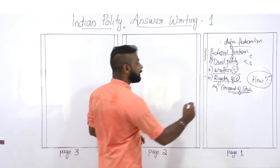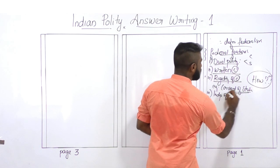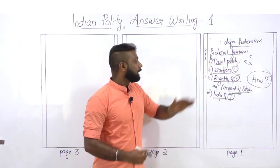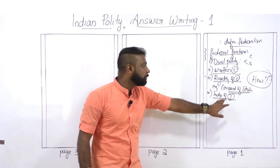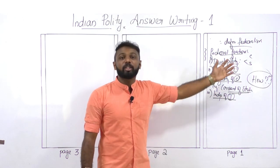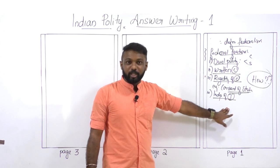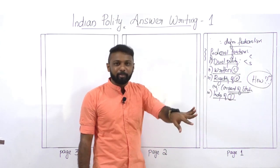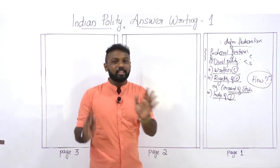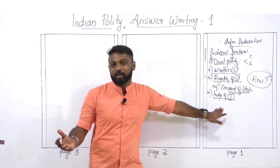The fourth federal feature is independence of the judiciary — underline that. Both the center and state must act according to the written Constitution. If either government violates it, the judiciary interferes. To maintain its independence and work efficiently, we need to give independence to the institution of the judiciary, which supports the federal features of our Constitution.